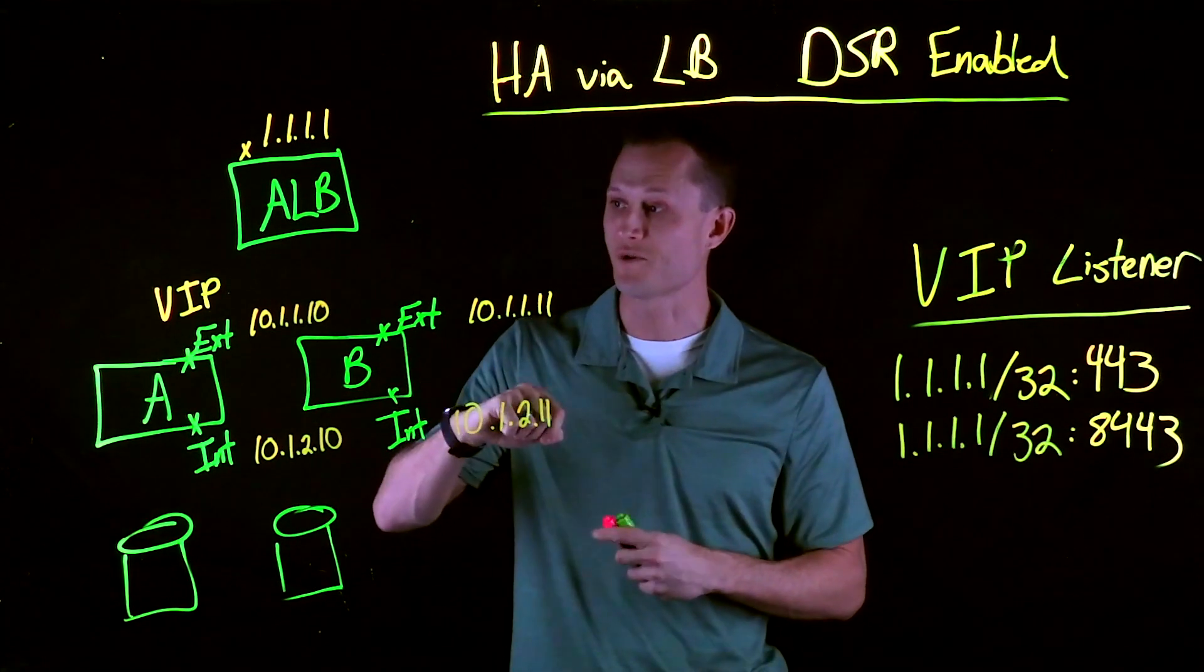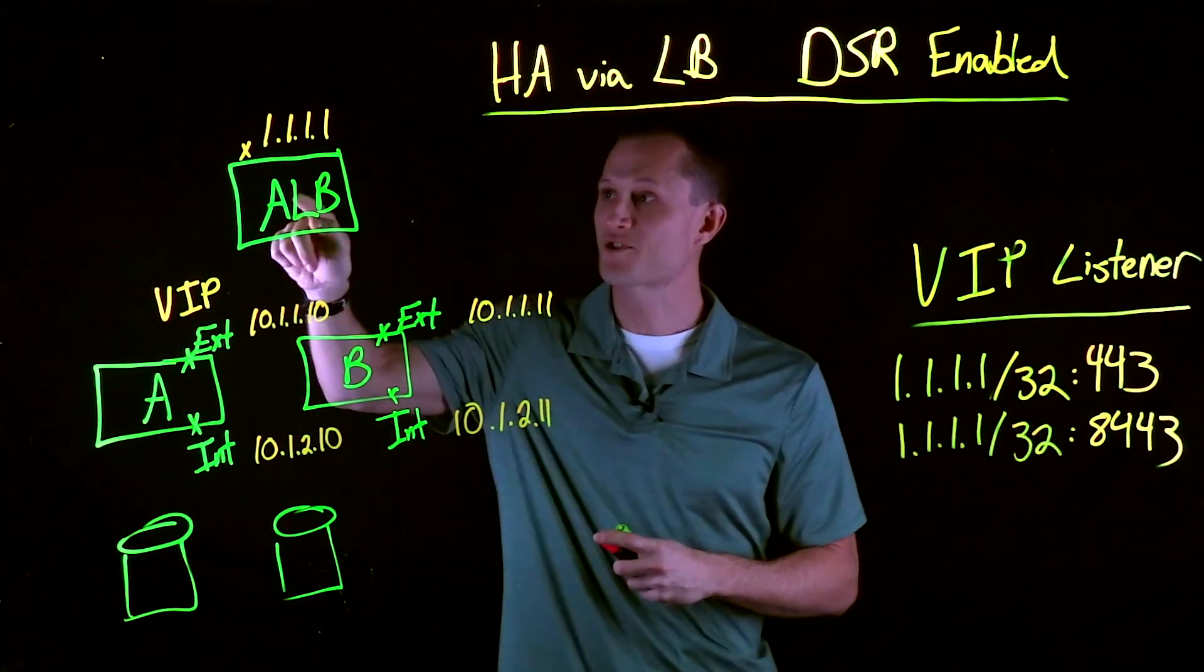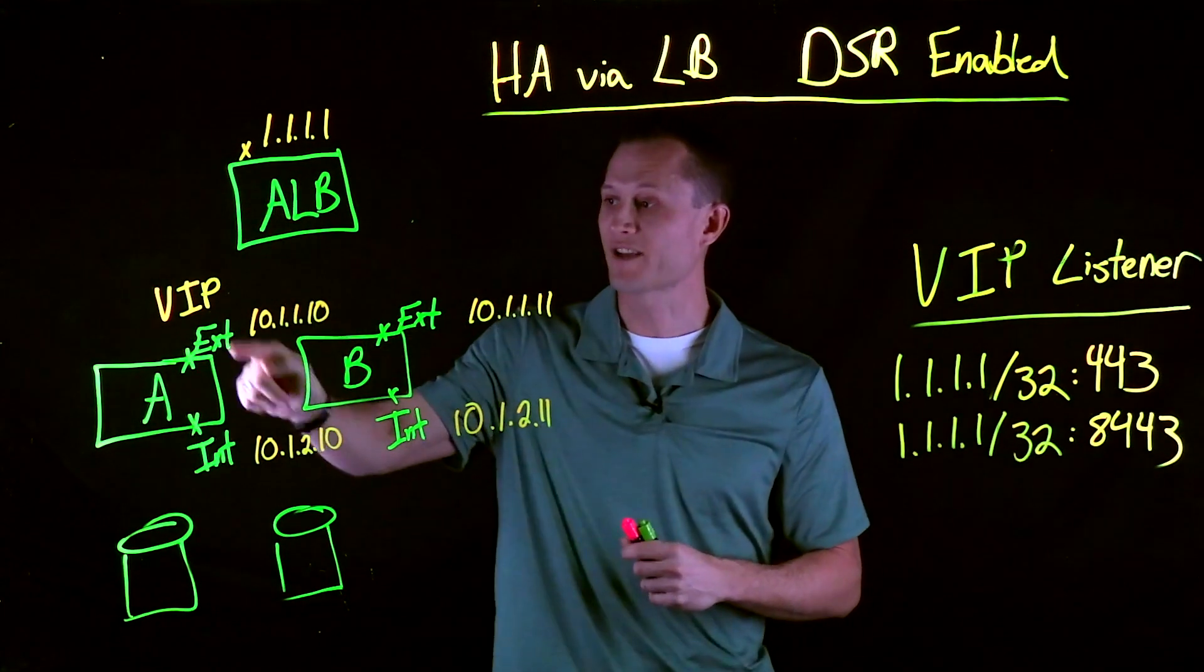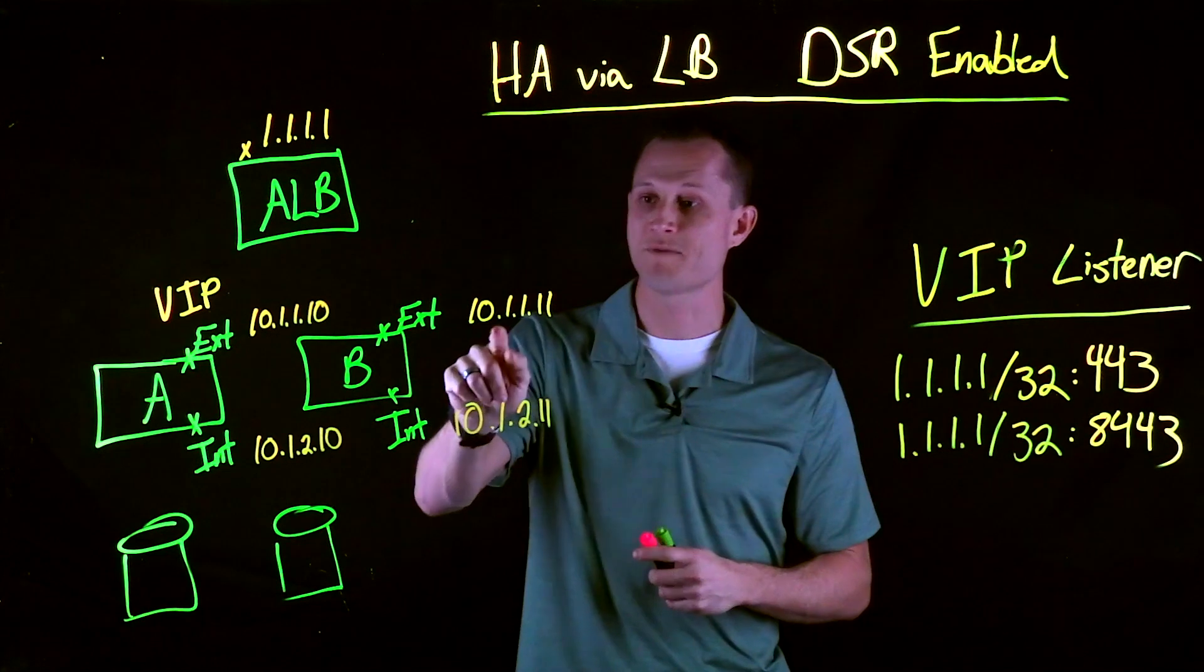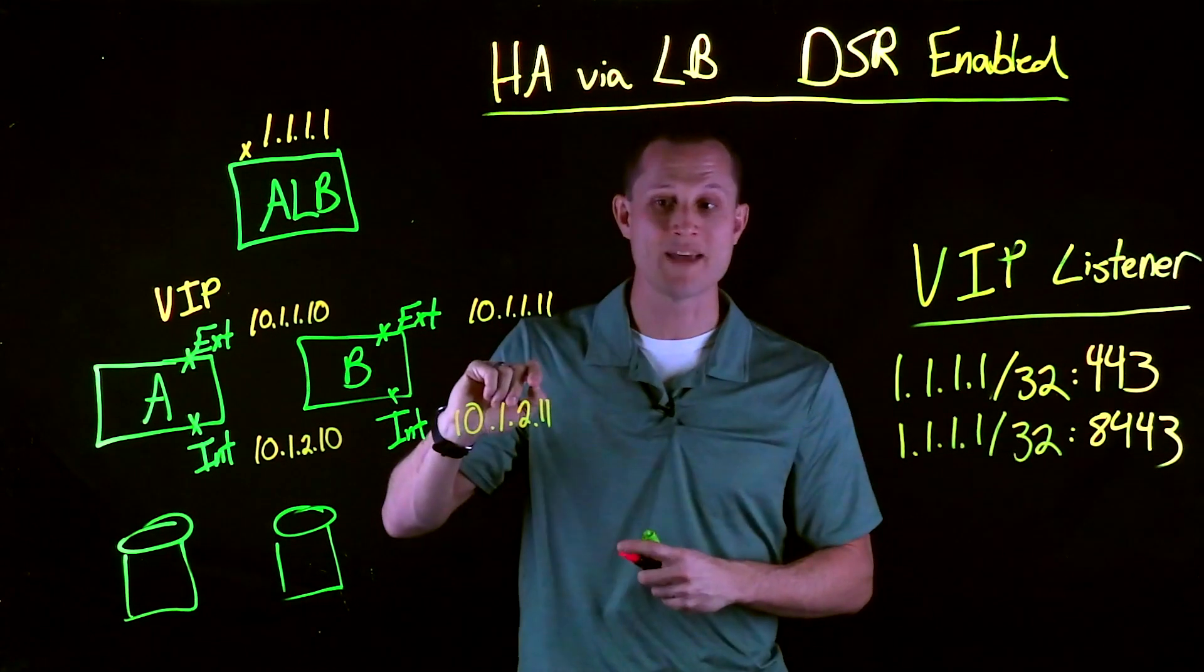We can actually talk to the primary IPs. So, the ALB backend will be talking to Big IP Unit A on 10.1.1.10, and Big IP Unit B on 10.1.1.11. DNAT will be disabled.